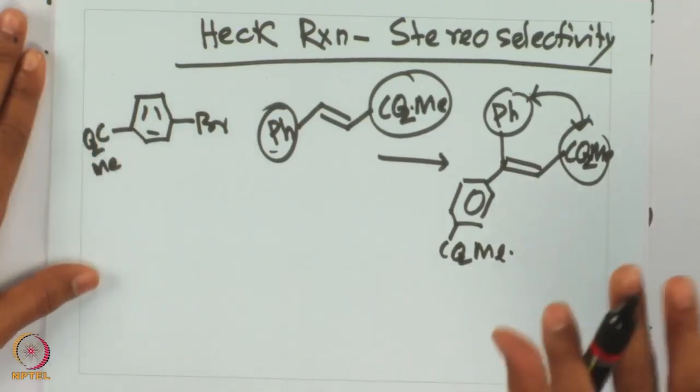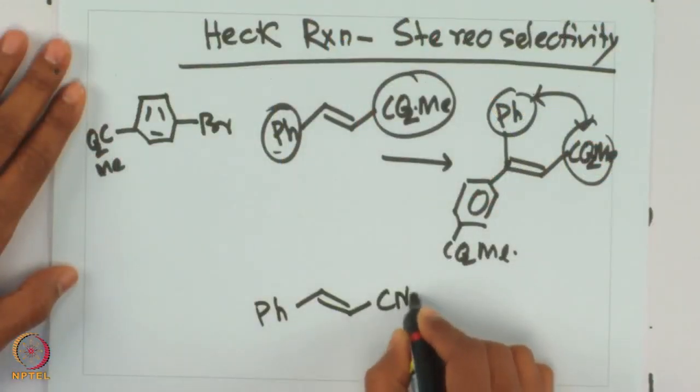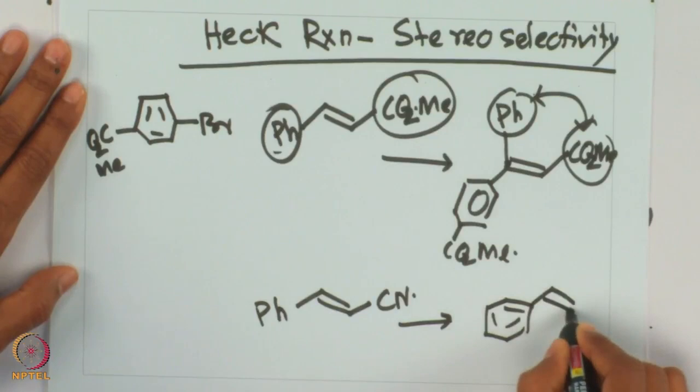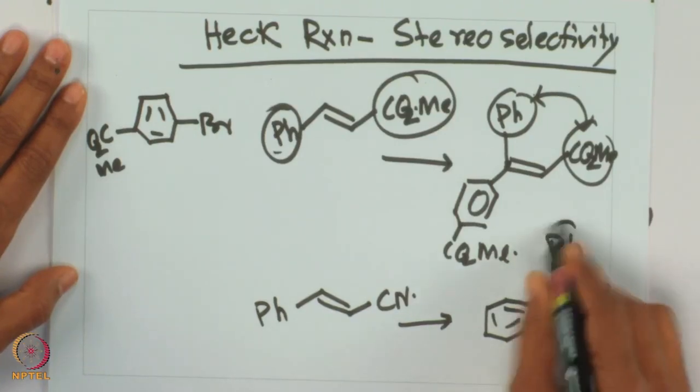So what we have seen: the aryl bromide is adding to the less substituted olefinic side, and the substituent at that side is going to be the other way around with respect to the alpha side — that is the stereochemistry. Similarly, with a cyano substrate, it will again give the similar type of product where cyano and phenyl are now on the same side with respect to each other.